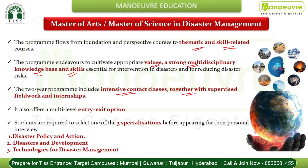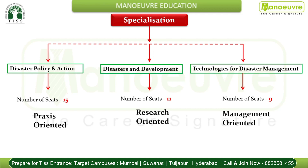The program offers great scope in course learning, along with fieldwork and internship opportunities. It also has a multi-level entry/exit option. Students are required to select one of the three specializations before appearing for their personal interview. The three specializations are: Disaster Policy and Action, Disasters and Development, and Technologies for Disaster Management. You can select any one of these before your personal interview.